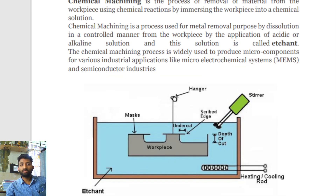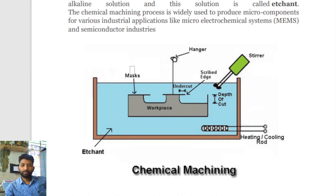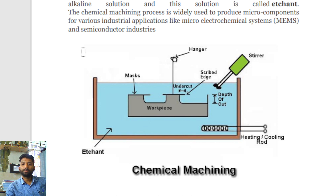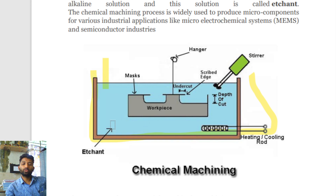First of all let us understand what is meant by chemical machining method. I will explain using a sketch. As the name itself suggests, we are using chemicals. There is a container, and in this container you have etchant — this chemical is known as etchant. One thing is clear: this chemical is nothing but etchant.